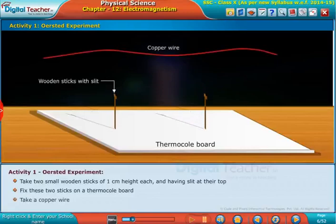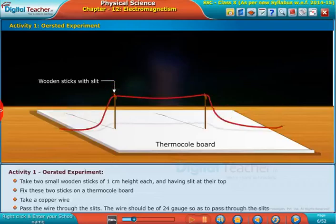Take a copper wire. Pass the wire through the slits. The wire should be of 24 gauge so as to pass through the slits.